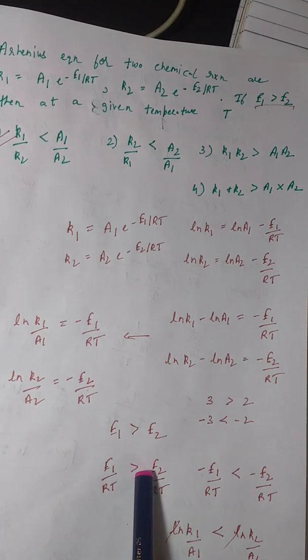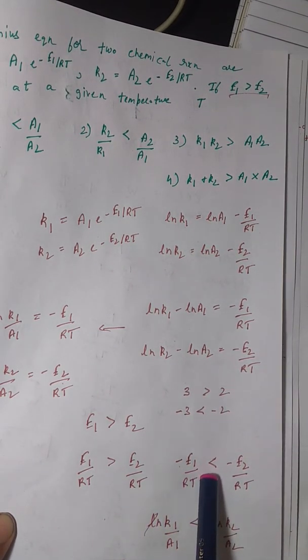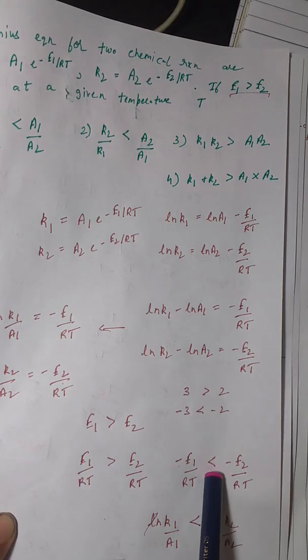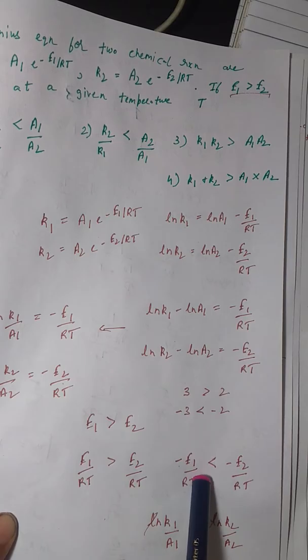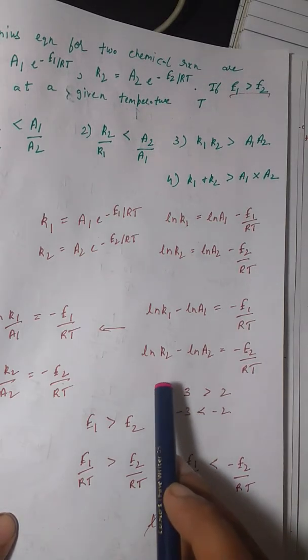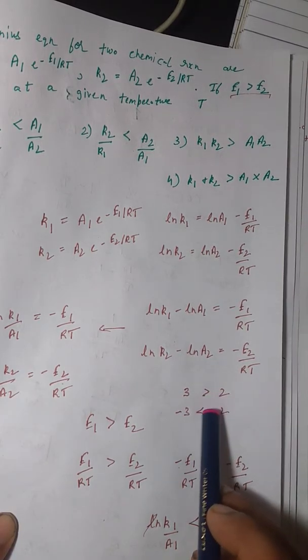Now what we do is we add negative signs on both the sides. So on adding the negative sign on both the sides, this sign changes. Now this is a very fundamental property, and for those of you who are confused, you can just imagine this: